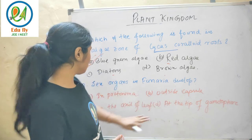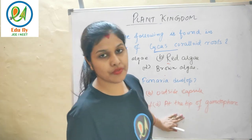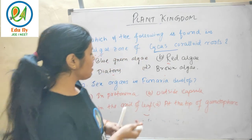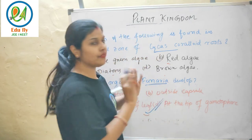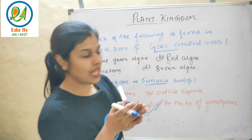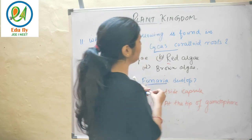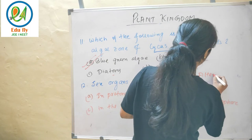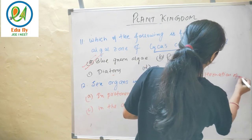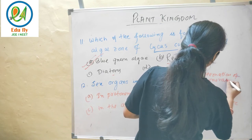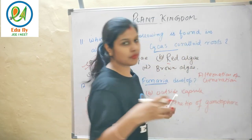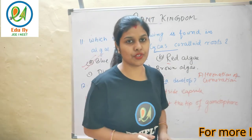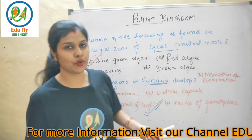Sex organs in Funaria develop at the tip of the gametophore. The Funeria plant itself constitutes the gametophore. Funaria shows alternation of generation — from sporophytic to gametophytic phase and back again.